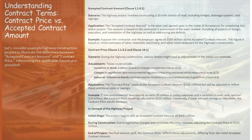Imagine a sprawling 20-mile highway — a backbone of commerce and connectivity, stretching across scenic landscapes. This highway isn't just a path of asphalt; it's a complex orchestration of planning, design, and execution. At the heart of this orchestration lies a contract, a blueprint of promises and expectations. Our journey begins with the accepted contract amount: after rounds of negotiations and assessments, the contractor and the employer shake hands on $100 million.